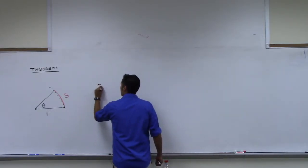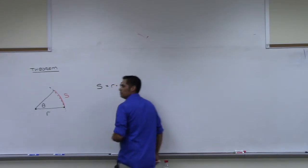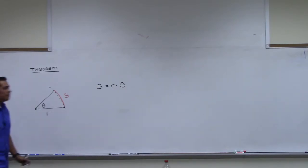By this theorem, S is equal to R times theta. S equals R theta. This is the arc length formula.